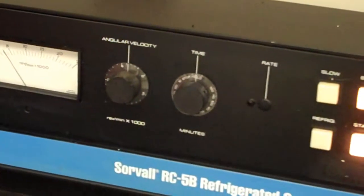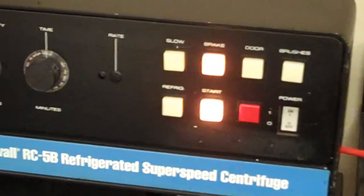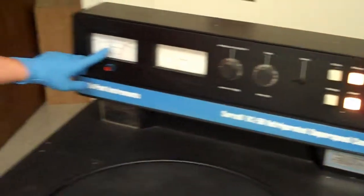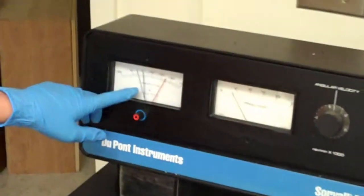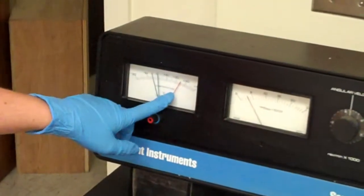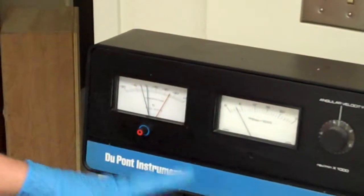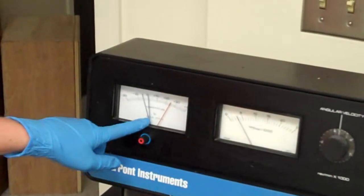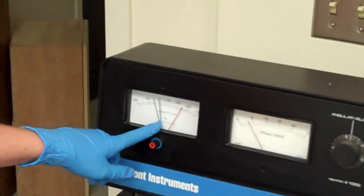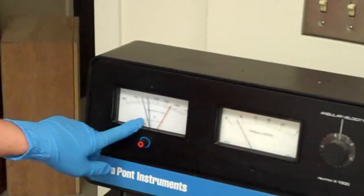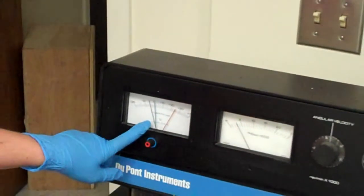The only way that this centrifuge will cool is if it's running. So once we get it down to the temperature that we want, you set the red at the overheat temperature, which means that your samples can't get hotter than this temperature, and the blue is your cold temperature. The black is the temperature of the centrifuge at the current moment.